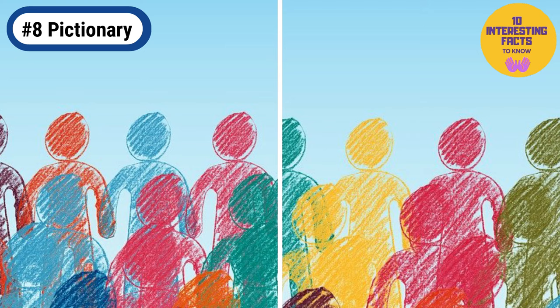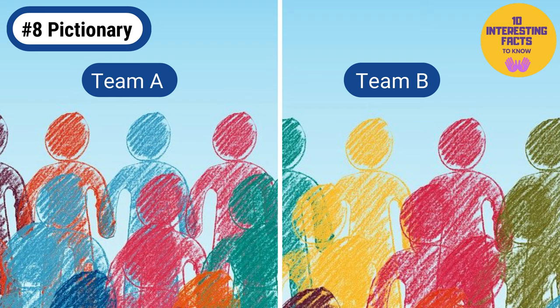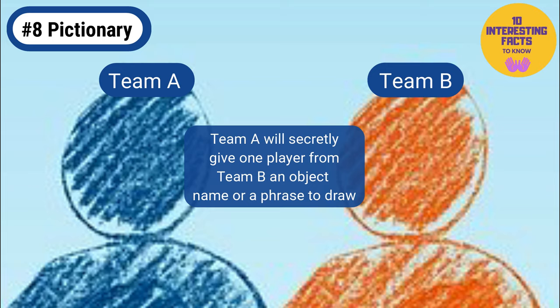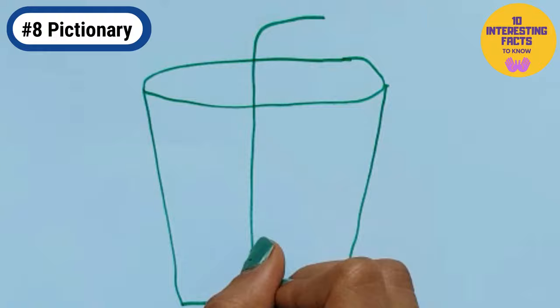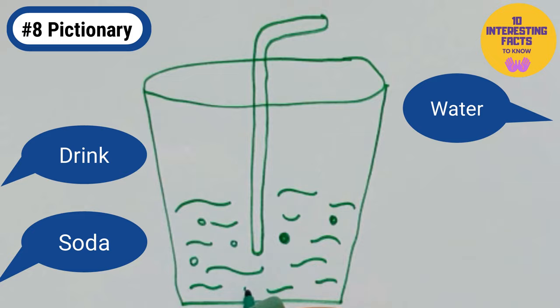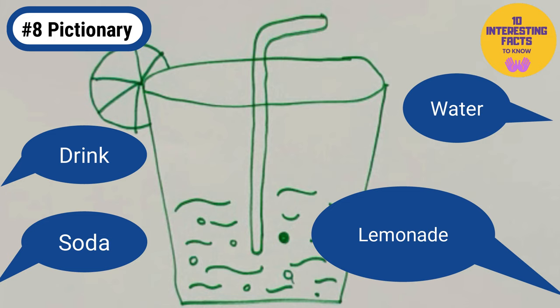Pictionary. This one is best played in two teams. Team A will secretly give one player from team B an object name or a phrase to draw. That player then draws a picture of that object and the rest of her team will try to guess that object. If the team guessed it right, they get a point. Hooray! Team B has successfully guessed the word lemonade and now the other team gets a turn.